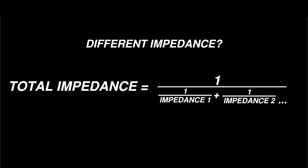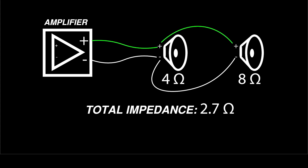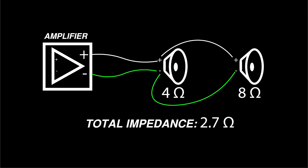If the speakers in the parallel circuit do not all have the same rating, you'll need to use this formula. To calculate the total impedance of a 4 ohm speaker and an 8 ohm speaker connected in parallel, I'll plug the numbers into the formula like this, which gives us a total impedance of about 2.7 ohms. To connect speakers in parallel, wire the positive terminal of the amplifier to the positive terminal on each speaker, and wire the negative terminal on the amplifier to the negative terminal on each speaker.